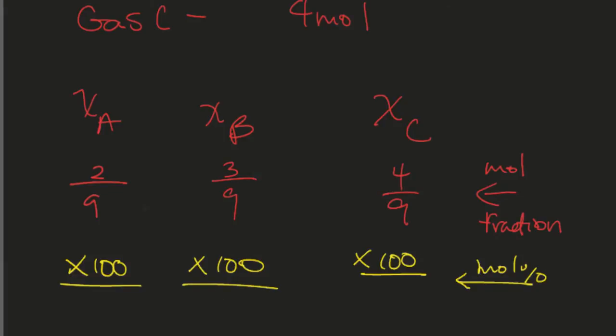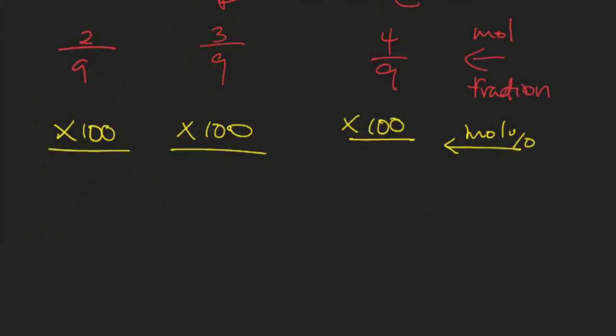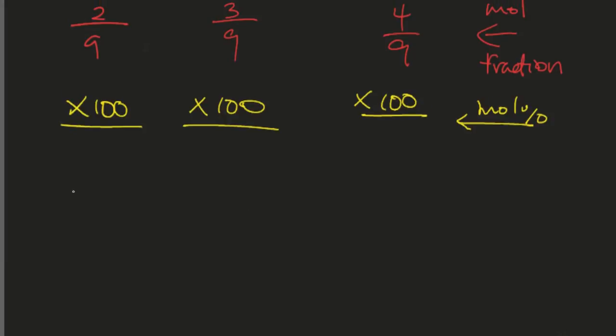Alright, so now what if I wanted the partial pressure for each gas? We'll just say P gas equals what, given the total pressure. The total pressure is approximately 1.2 atmospheres.